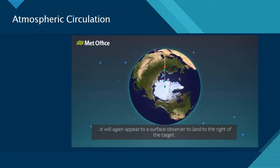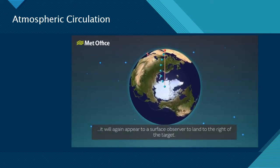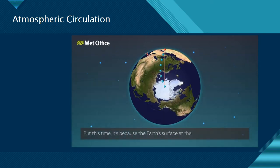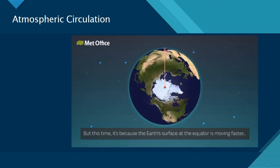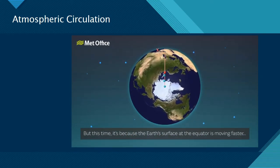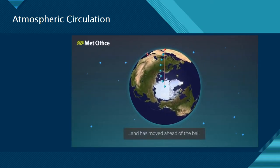If the ball is now thrown from the North Pole towards a point near the equator, it will again appear to a surface observer to land to the right of its target. But this time, it's because the Earth's surface at the equator is moving faster and has moved ahead of the ball.